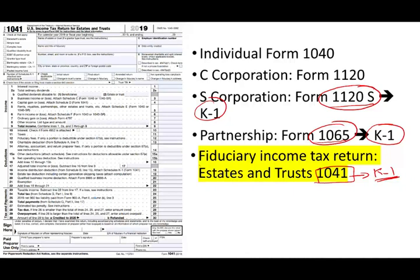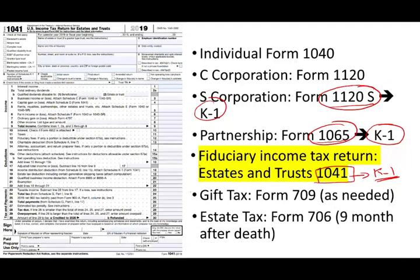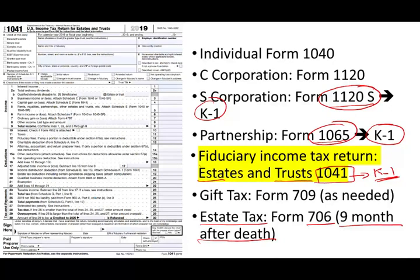We also need to be aware of Form 709, the gift tax, which is filed as needed. Many people confuse the gift tax and the estate tax — Form 706 — with Form 1041. Form 706, the estate tax, is filed nine months after the death of the individual, and this is where assets are valued and taxes are paid to the government one time. Form 1041 is different, and that's what we need to discuss.